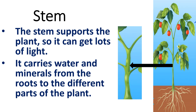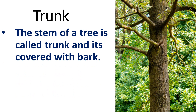Stem. The stem supports the plant so it can get lots of light. It carries water and minerals from the roots to the different parts of the plant. The stem of a tree is called the trunk, and it is covered with bark.